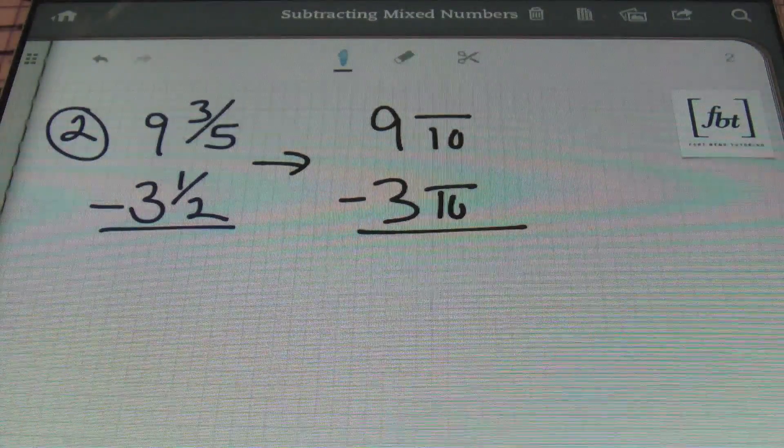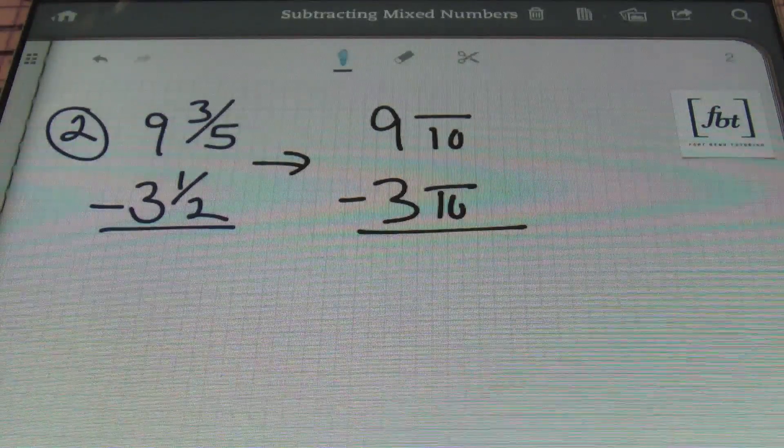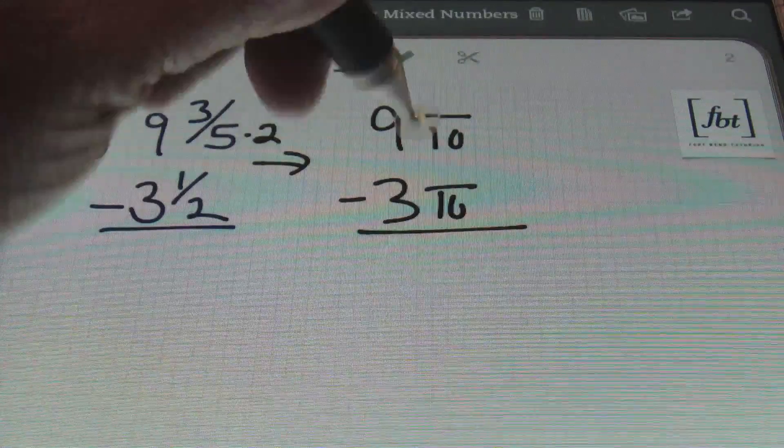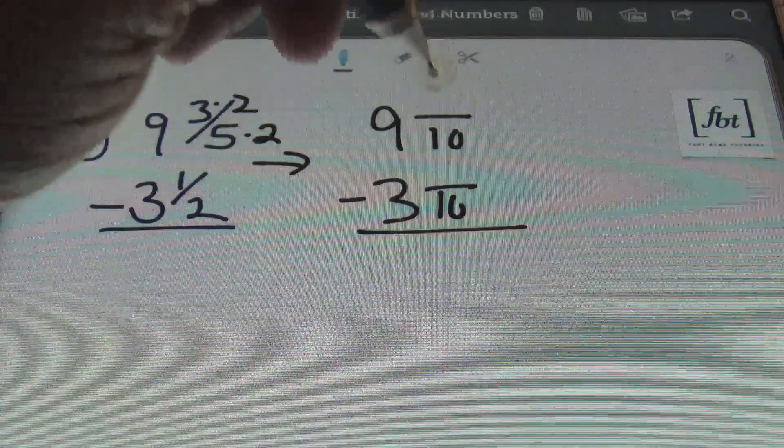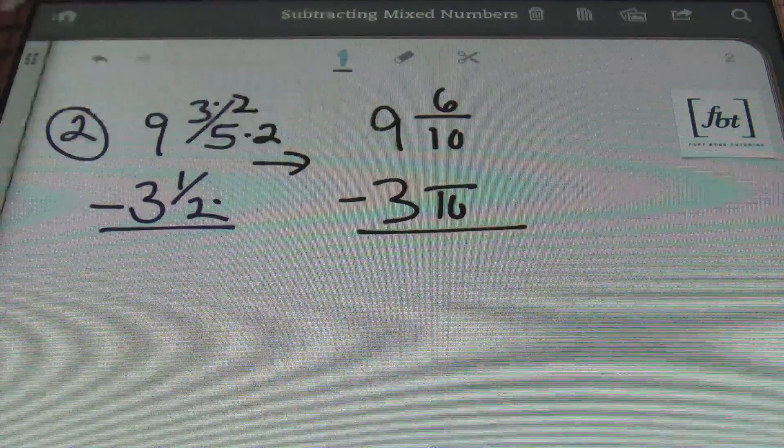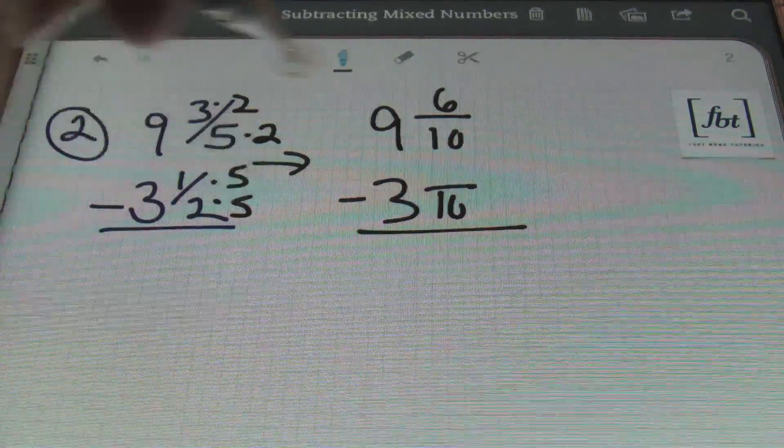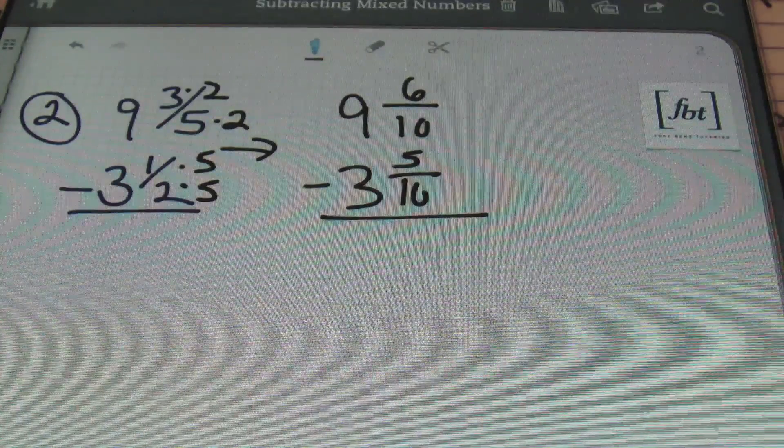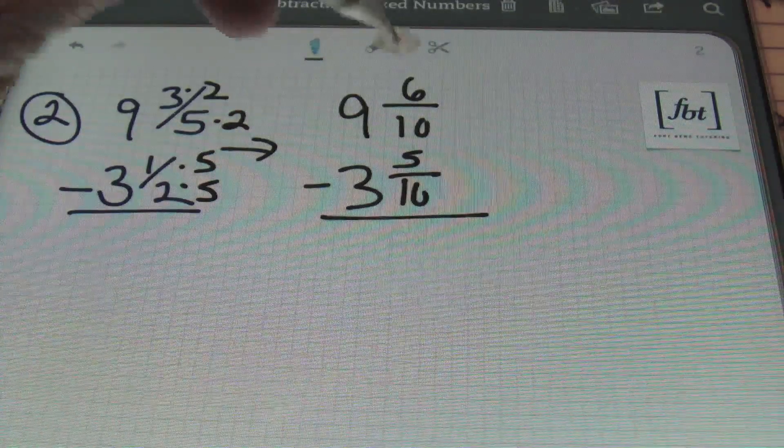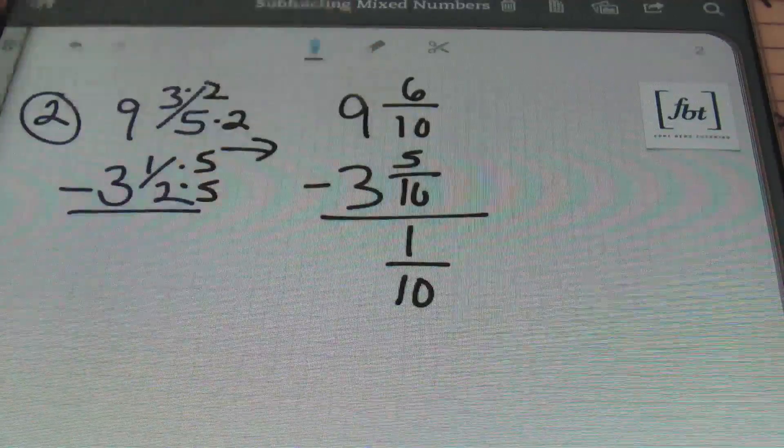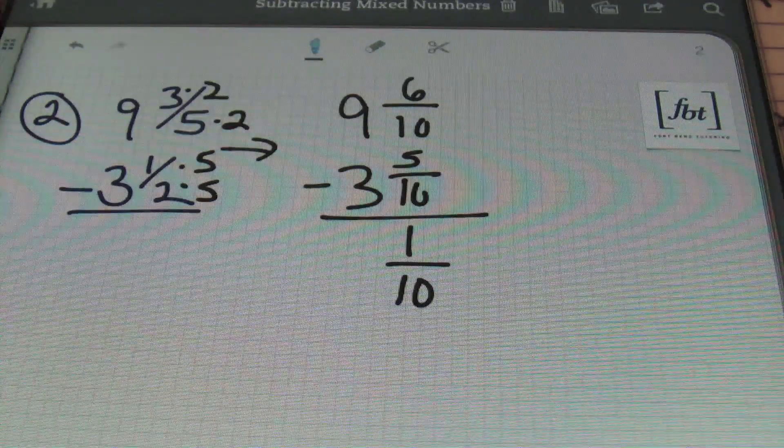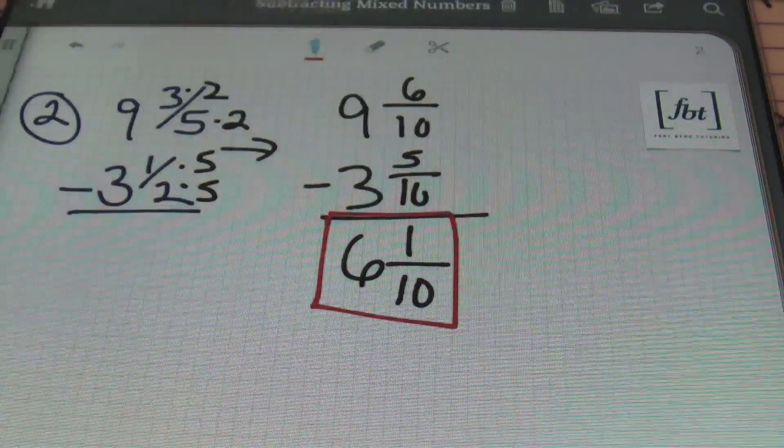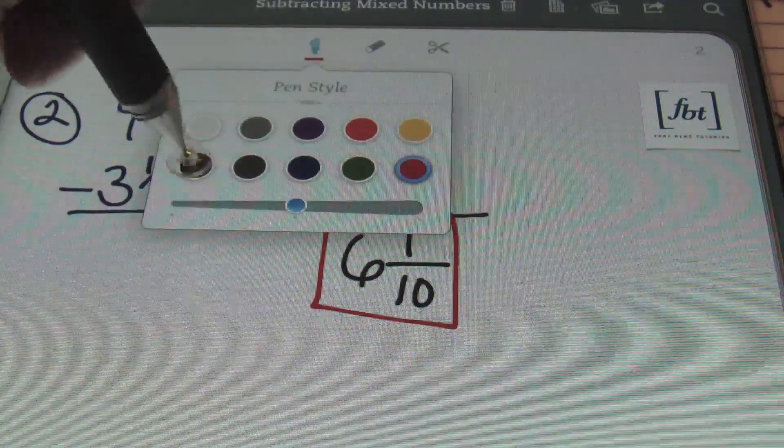Now you need to create equivalent fractions. We do this by multiplying the numerator by the same exact number we had to multiply the denominator by. So 5 was multiplied 2 times to get 10, so 3 times 2 gives me 6. Then 2 was multiplied 5 times to get 10, so 1 times 5 is 5. Now that you have equivalent fractions with common denominators, you can go ahead and subtract finally. 6 minus 5 is 1 over that same denominator of 10, and 9 minus 3 is 6. So that's my answer, 6 and 1 tenth, ladies and gentlemen. Done and done.